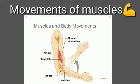Various movements like talking, laughing, walking, jumping, throwing, movements of eyelids, etc. are possible due to muscles. Muscles are present in all parts of the body. As the body grows, the muscles also grow. About 600 muscles are present in the human body. They contribute almost 40% of the body weight.